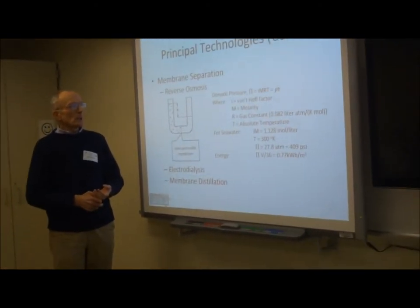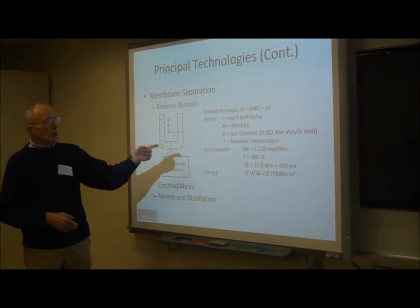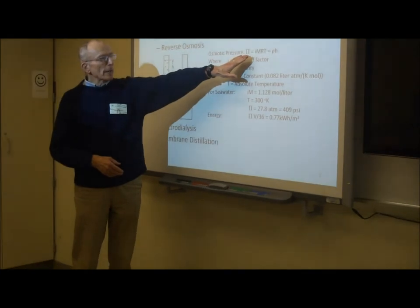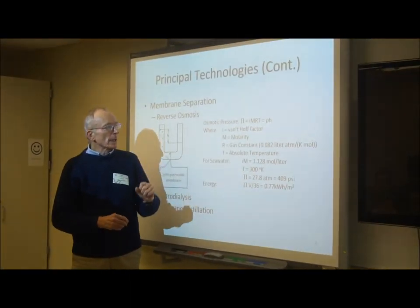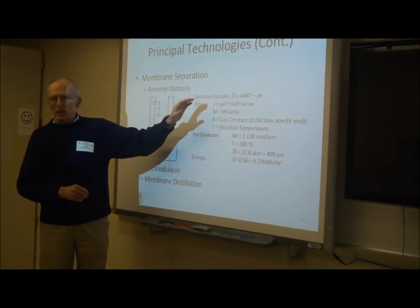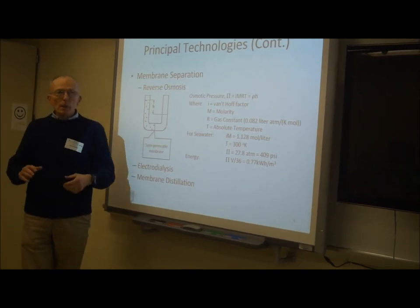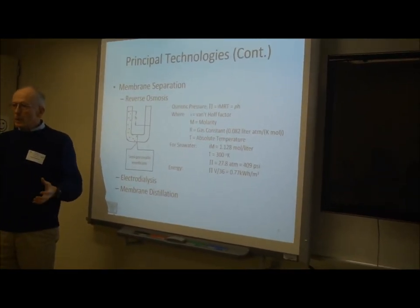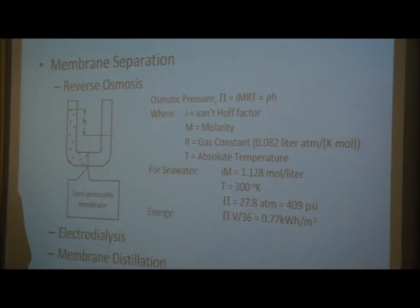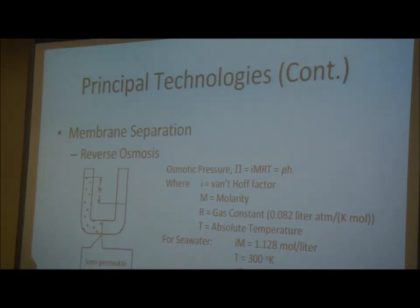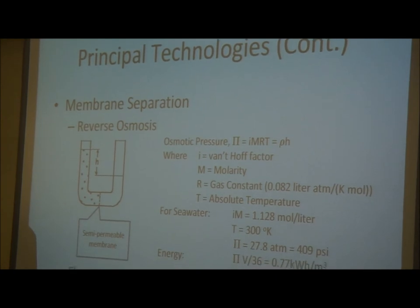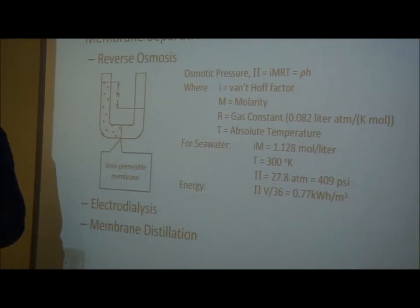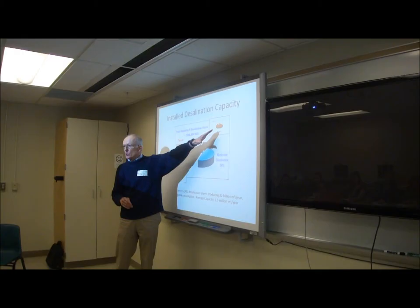This was described by the scientist Van't Hoff, early in the 20th century, who determined that the osmotic pressure π is equal to i times M times R times T, where i is the Van't Hoff factor. It describes how completely the solute separates or ionizes into components. For sodium chloride in water, which separates into both sodium and chloride ions, the Van't Hoff factor is essentially two.